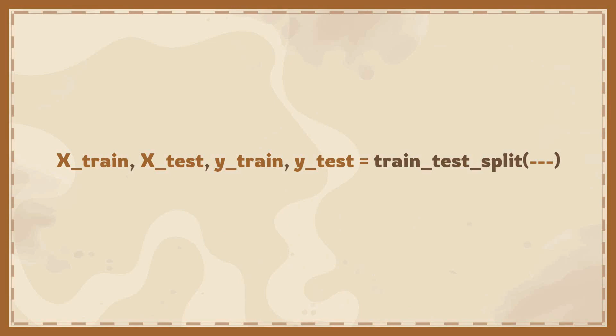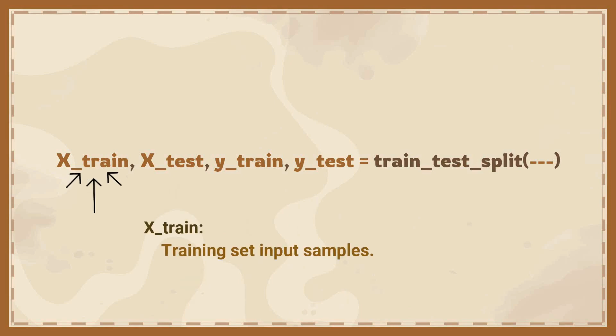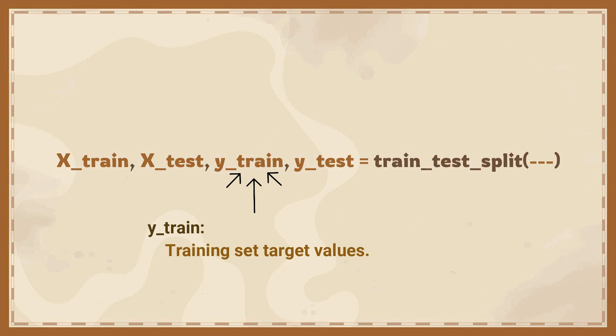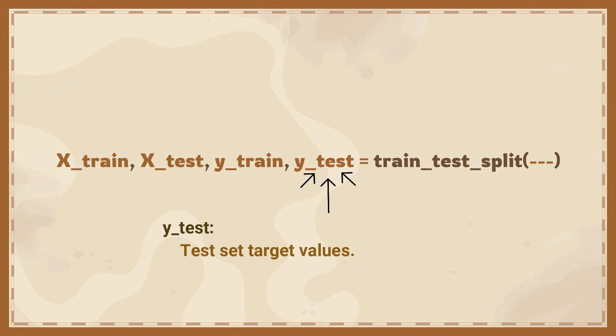The train_test_split function returns four subsets. The first subset represents X training samples, the second represents X test samples, the third represents Y train samples, and the fourth represents Y test samples.